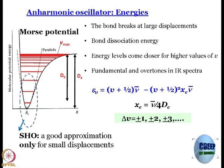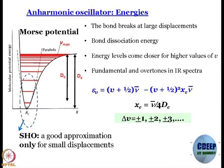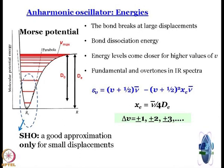So what is the expression for the energy? If you remember perturbation theory, we write the Hamiltonian as the zeroth order Hamiltonian plus a first order correction. The energy is the uncorrected energy plus the first order correction term. Here also, the first order correction can be guessed from our experience with the ro-vibrational spectrum. The uncorrected energy is ν̃(v + 1/2), and the first order correction term comes as a second order term in (v + 1/2).